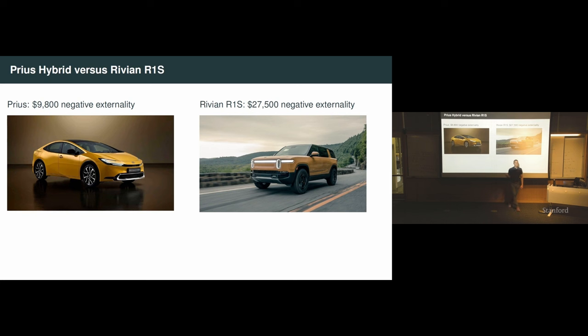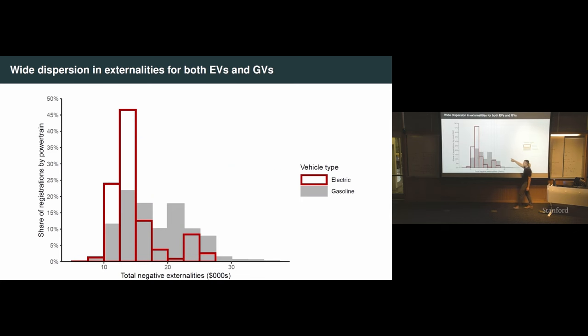Red is electric, gray is gasoline. So I'm superimposing two histograms. What do you see here? The averages, electric EVs are more clean than the gas vehicles, but there's a huge amount of dispersion and a huge amount of overlap. Let me just give you one concrete example. On the left, this is the Prius gas car. Its negative externality is about $9,800. On the right, this is the Rivian R1S. Its negative externality is almost three times bigger.